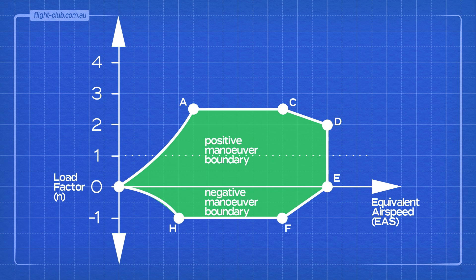Point O represents the zero speed and zero load factor. Point S is the stall speed at level flight and the load factor of 1. The V speed designator is VS.